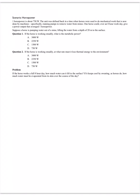The next problem has to do with horsepower. Horsepower is about 750 watts, and that came from a time when people used horses to do work. What they measured this for was lifting water out of mines in England — horses were used to basically run pumps. So we're looking at that situation: horses pumping water out of a mine, lifting it from a depth of 20 meters to the surface.